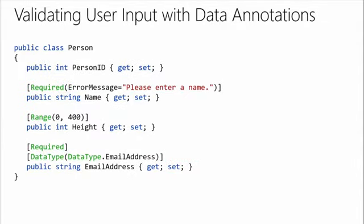You can identify what the data types are going to be, and you can identify validation. If something is required, just declare it - and you can provide a custom error message. For a number you can give it a specific range, like zero to 400 for a height integer. For data type email address, MVC will generate the HTML5 input type equals email, which instructs the browser to do validation. That's why some touch keyboards bring up the @ sign and .com when you tap an email field.